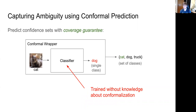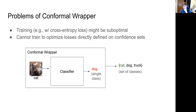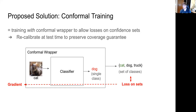A lot of papers in conformal prediction start with a given classifier and do fancy stuff on top. We looked at how to actually train this classifier. The key observation is that the classifier is trained without any knowledge of what happens at test time — the conformalization or calibration step. Training with cross-entropy loss doesn't relate to objectives we care about in terms of confidence sets, like inefficiency optimization.